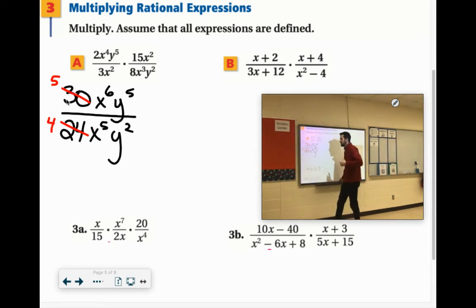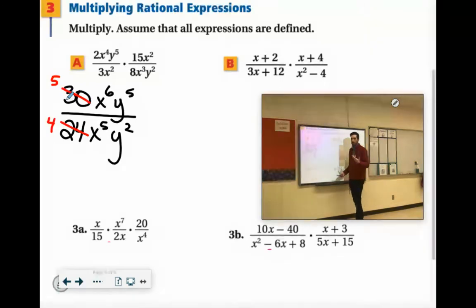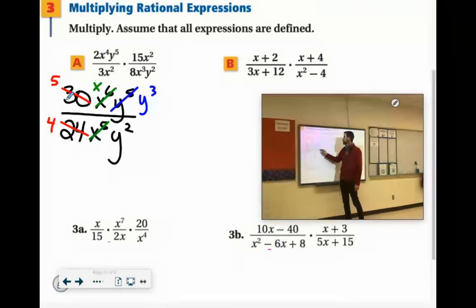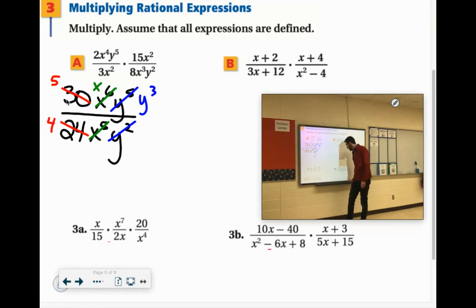As far as the x's, are there more x's on top or on the bottom? There's one more x up top. So they're completely gone on the bottom. And then as far as the y's go, you have 5 on top, 2 on the bottom. So there are 3 more y's in the numerator. The y's in the denominator are gone. So up in the numerator, we have 5x, y to the 3rd. Denominator, we just have 4.